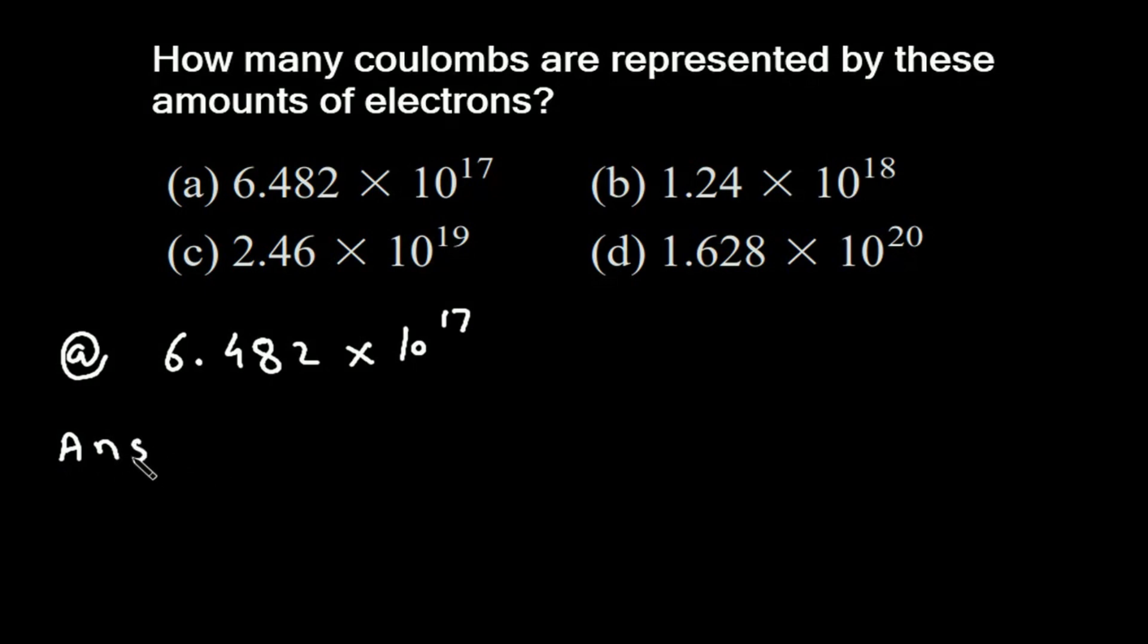Charge q is equal to this amount of electrons. We have 6.482 × 10^17 times the charge on one electron, which is minus 1.602 × 10^-19.